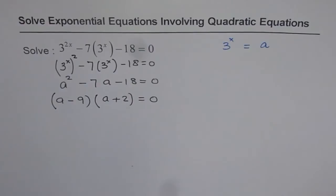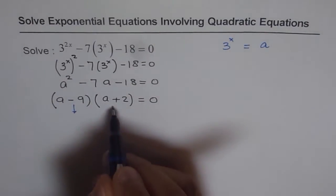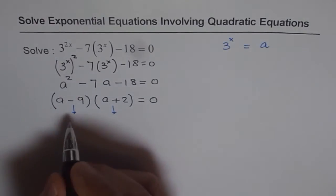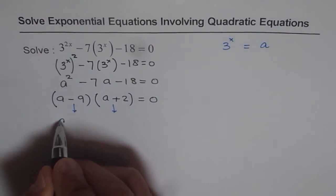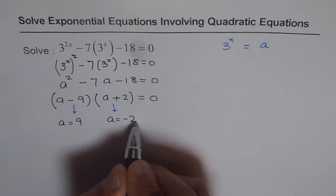Now, this gives us 2 solutions. One of the solutions is from here and the other one is from the other factor equating them to 0. From the first factor, we get a equals 9 and from the second factor, we get a equals minus 2.